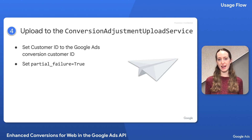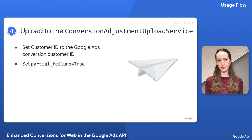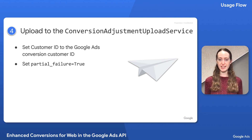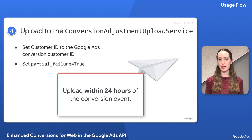With our conversion adjustment ready, the next step is to send it to the API through the conversion adjustment upload service. Make sure that you upload to your Google Ads conversion customer and set partial failure to true. These are required for all conversion uploads, not just enhanced conversions for web. Note that setting partial failure means any errors are returned in the partial failure error field of the API response. You must upload the enhancement within 24 hours of the original conversion.